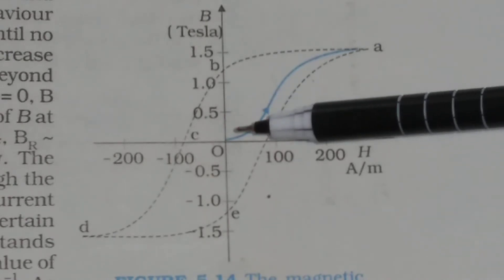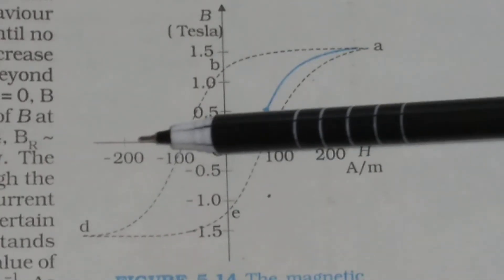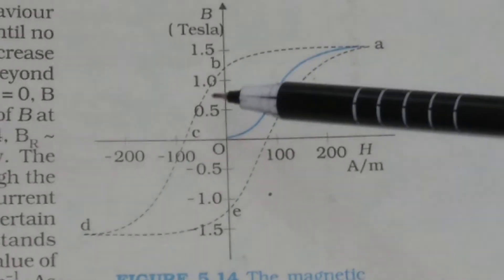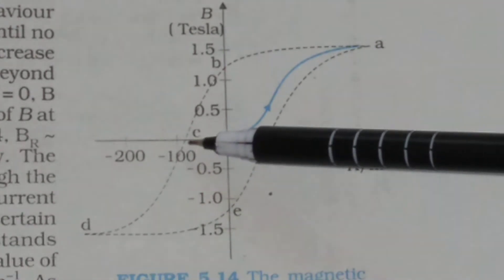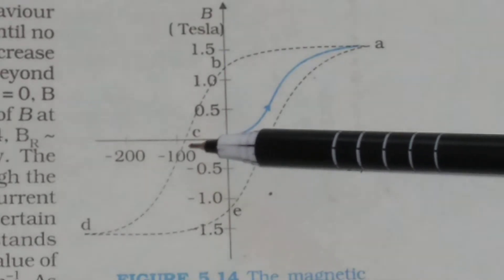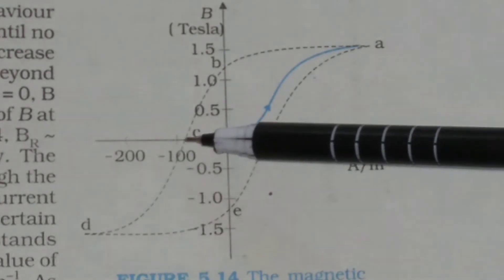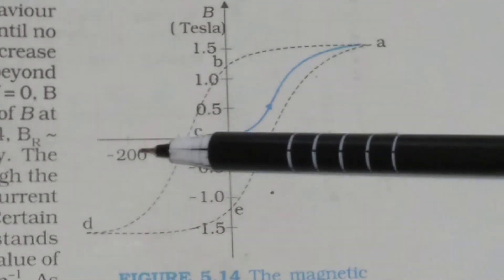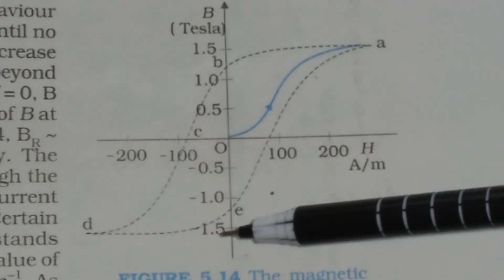Now reverse the current in the solenoid and increase the magnetic intensity in the negative x-direction. The value of H at which the magnetic field B equals zero is called coercivity — this point C is the coercivity, at around HC, approximately minus 90 ampere per meter. If you further increase the reverse current, the magnetic field will get saturated at about 1.5 tesla.